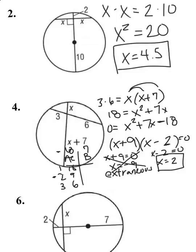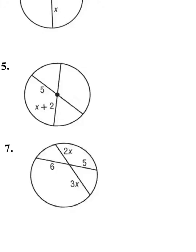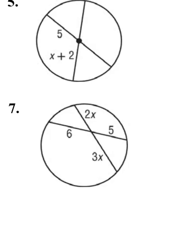We're going to do one more question on this page, question number seven. Hopefully that gives you a good idea of what to do when you have chords that intersect inside a circle. This time I'm going to take 6 times 5 and set it equal to 2X times 3X. Yes, they both have X's this time, but one of them doesn't have a variable at the end, so I don't have a quadratic equation. 30 equals 6X squared.